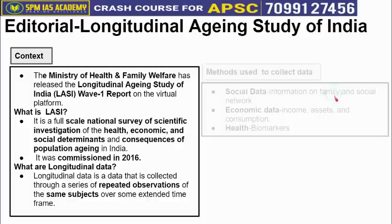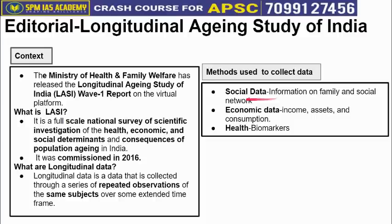Social data was collected from family members and other social networks of elderly people. In the first phase, data of 70,000 people was collected. Information was gathered from family members and people around elderly individuals. Economic data was also collected — their overall income, assets, and consumption levels.